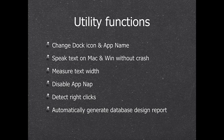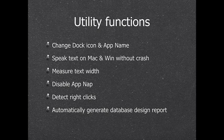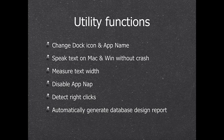You can disable AppNap on Mac, Apple's feature that saves battery by pausing your application in the background, and tell the system you're doing important work like a backup and don't want to sleep. You can detect right mouse clicks — when someone clicks a button you can ask the plugin if it was left or right, and show a context menu on right-click. We can also automatically generate database design reports, and some people have scripts that generate the DDR every evening, store it in a folder with version tracking to see all database changes over several months.